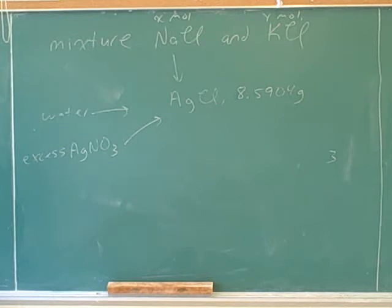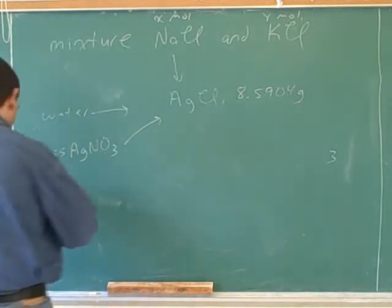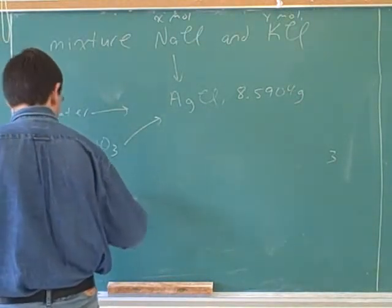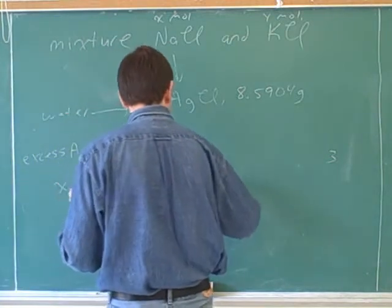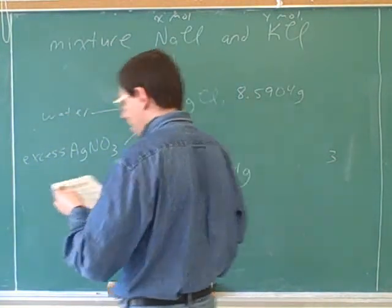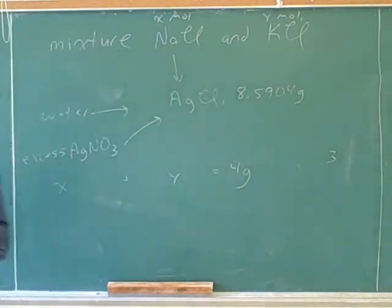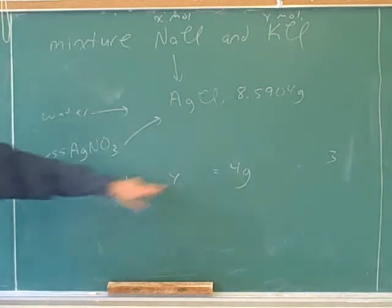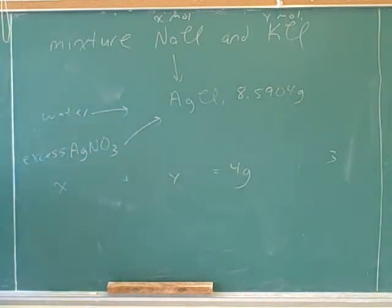We can get one of the equations out of the first sentence. So x plus y equals 4 — but that's in grams, not moles. This is in moles and this is in grams, so that's a good starting point but we need to work on this to get the units to work out. What do we need to add to the left-hand side here? Times one mole over how many grams of NaCl?